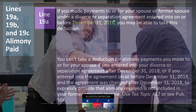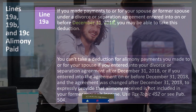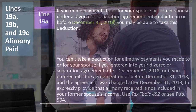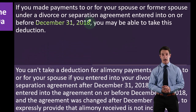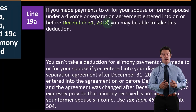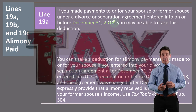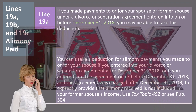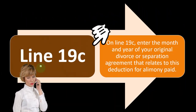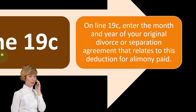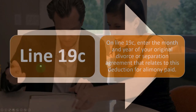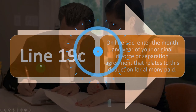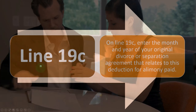Divorce agreements before the cutoff date had to deal with the issue of whether payments should be categorized as alimony or child support, which had bigger tax implications and led to more confusion. After the cutoff date, divorce agreements don't have that complicating factor clouding the scenario in terms of tax implications, so people should better understand their agreements going forward. Line 19c: enter the month and year of your original divorce or separation agreement that relates to this deduction for alimony, so that the IRS has the information and can confirm that the alimony arrangement is from an agreement before the cutoff date.